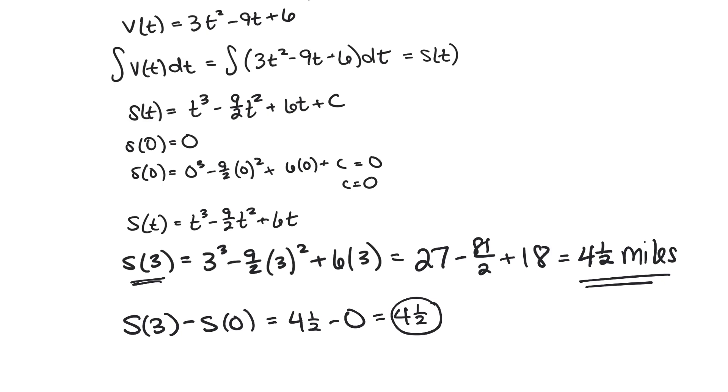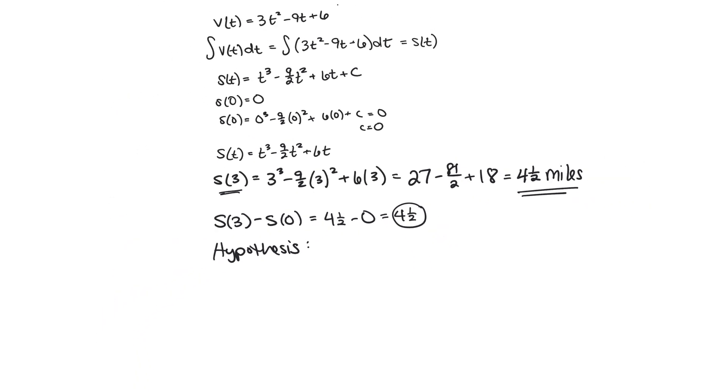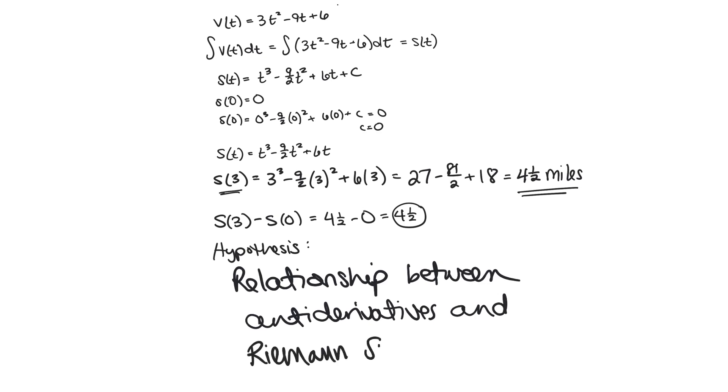And so this leads us to a hypothesis that there is a relationship between antiderivatives and Riemann sums, in particular limits of Riemann sums which by which we mean definite integrals. And that might have been given away by the notation because we use very similar notation for definite integrals and antiderivatives. But actually at this point in the course other than this example we don't know that there is a relationship there.